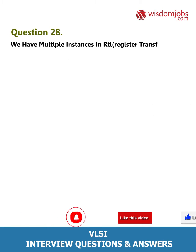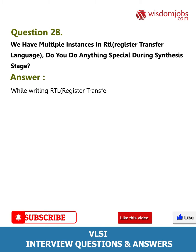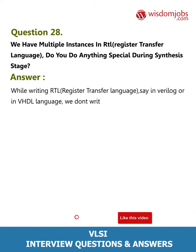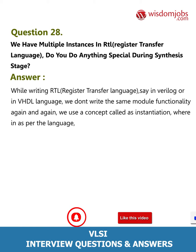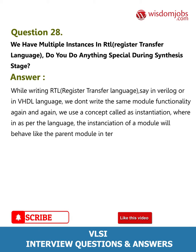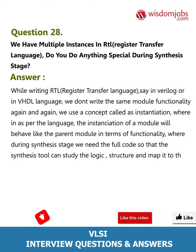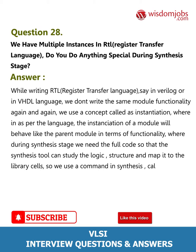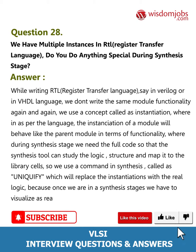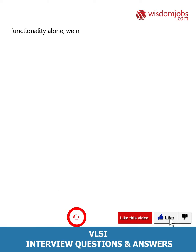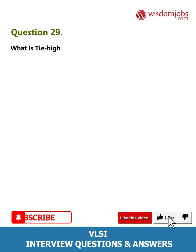Question 28: We have multiple instances in RTL (Register Transfer Language) — do you do anything special during synthesis stage? While writing RTL, say in Verilog or VHDL, we don't write the same module functionality again and again; we use a concept called instantiation, wherein the instantiation of a module behaves like the parent module in terms of functionality. During the synthesis stage, we need the full code so the synthesis tool can study the logic structure and map it to library cells. We use a command called 'uniquify,' which replaces instantiations with real logic, because at synthesis stage we need to visualize real cells in terms of the physical world.